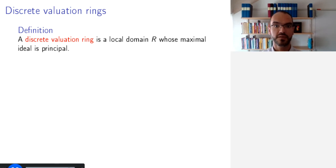A discrete valuation ring is a local domain R whose maximal ideal is principal. So local means that there is a unique maximal ideal. Domain means that the ring is non-trivial and has no zero divisors. And the additional requirement is that the maximal ideal, say M, is generated by one element, say T. And any generator of this maximal ideal is called a uniformizer.